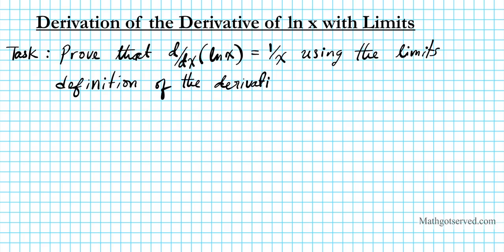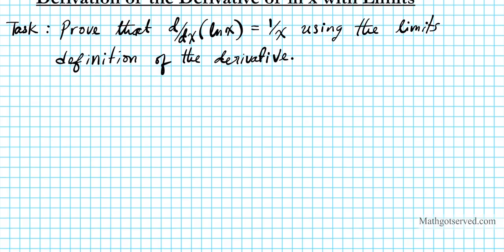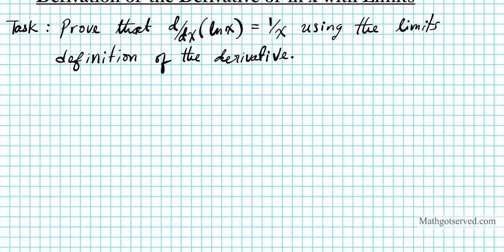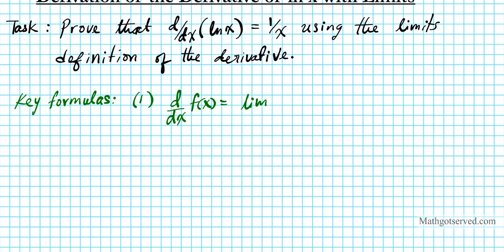Before we proceed with the proof, I want to go over some key formulas needed to execute the proof successfully. The first is the limit definition of the derivative: d/dx of f(x) is defined as the limit as h approaches 0 of f(x+h) minus f(x), all over h.